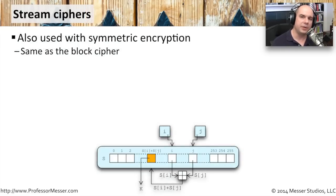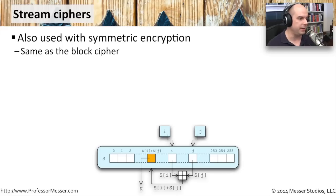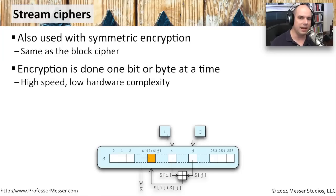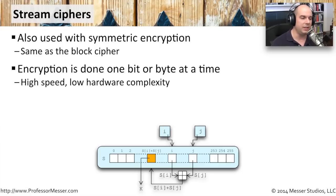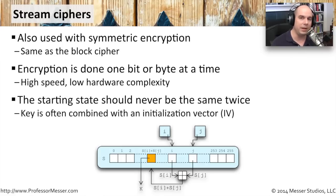Another type of cipher is called a stream cipher. Just as the block cipher is only used with symmetric encryption, stream ciphers are also only used with symmetric encryption. Instead of encrypting entire blocks at a time, it's done one bit or one byte at a time — all being done as the data is streaming by. This can run very, very quickly and usually uses very low hardware complexity. You don't need a lot of fancy chipsets or calculations to make this happen, so it can be done very quickly as the data streams by. That makes sense — if you're streaming data quickly, you need a method that can keep up with that stream.